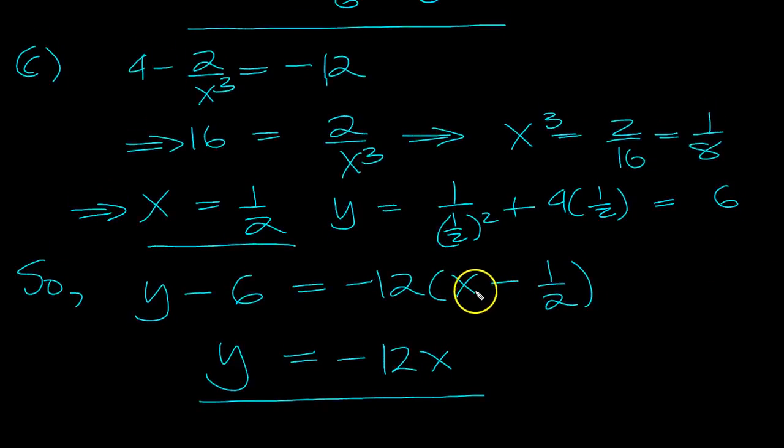Seems a bit strange, so let's double check that. y is 1 over (1/2) squared. y minus 6 then. Gradient is -12. That will be plus 6, plus another 6.